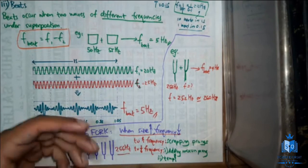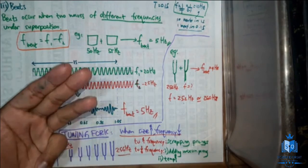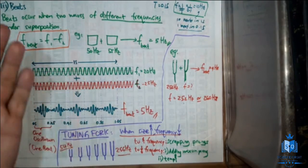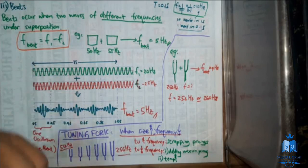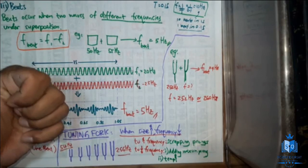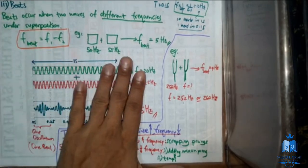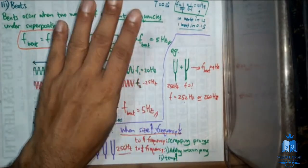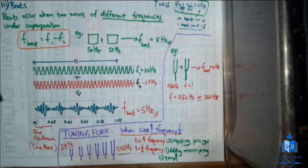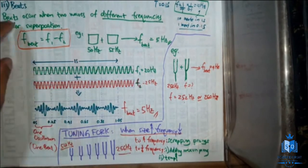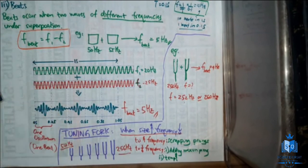Transverse waves can undergo reflection, refraction, diffraction, polarization, as well as superposition — and through superposition they can form interference, standing waves, and beats. Longitudinal waves can undergo reflection, refraction, diffraction, and can produce beats, standing waves, and interference, but they cannot undergo polarization. That is the summary of properties of waves.